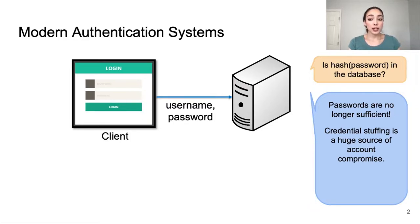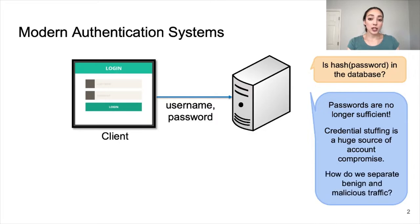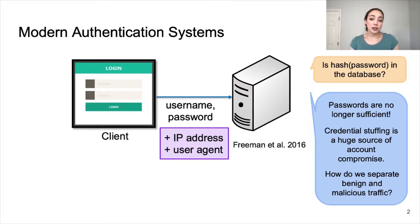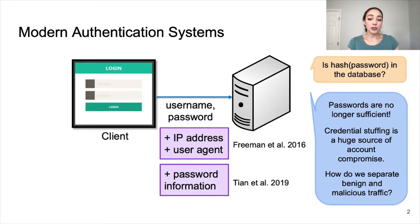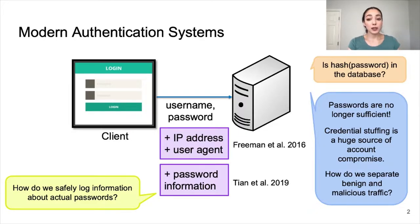So industry practitioners are trying to rely not only on passwords anymore. An open question is: what information can be used to differentiate benign login attempts from malicious attacks? In a study at LinkedIn, Freeman et al. looked at using the IP address and user agent with some success. In another study at Microsoft, Tian et al. suggested using password information and showed promising results on simulated data. However, the question remains: how do we safely log information about actual passwords in real login data?